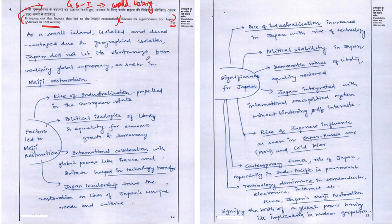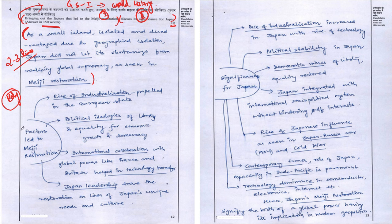Whenever there are two components in a question, we should have two subheadings in the answer. Before proceeding, let's look at the structure of the answer this topper has addressed. There is a clear introduction, but it has been written in four and a half lines — ideally, an introduction should be two to three lines. The body has been approached in a subheading format, with two clearly identifiable subheadings.